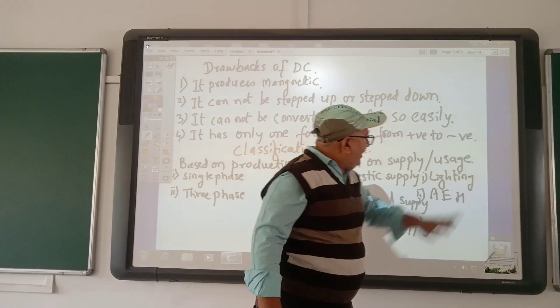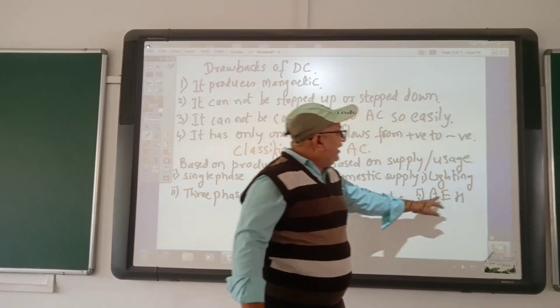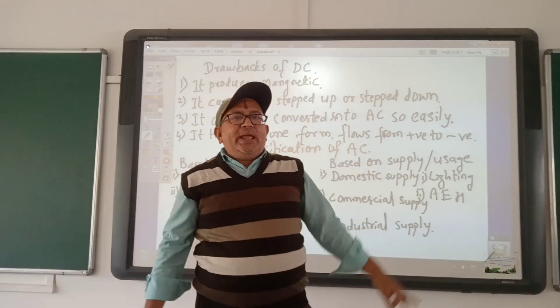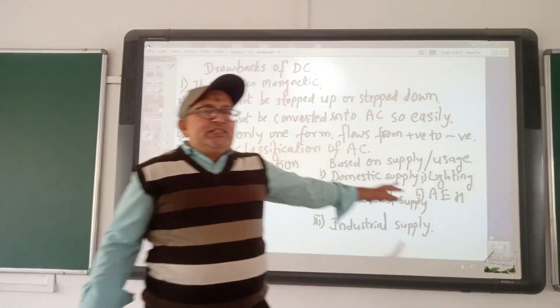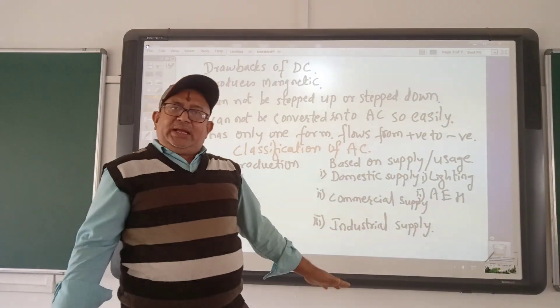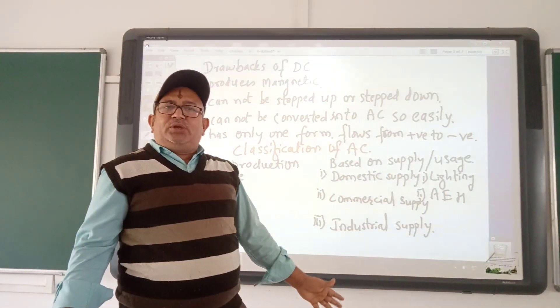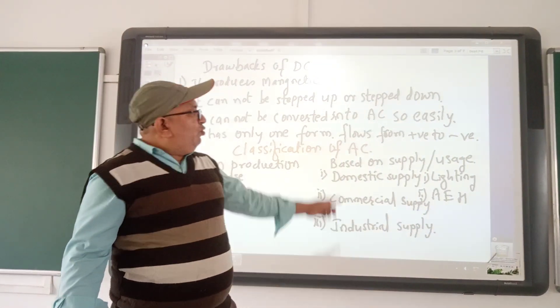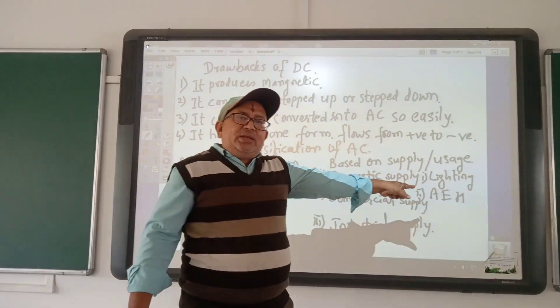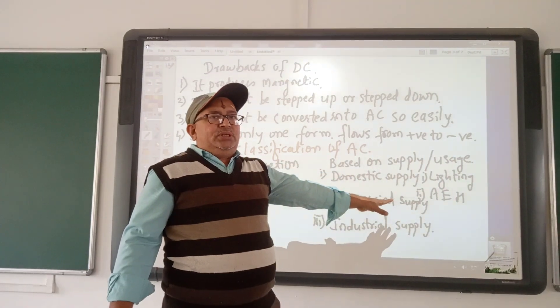In domestic supply, there is lighting supply. Lighting supply is intended for poorer households where people can use electricity only for lighting purposes.